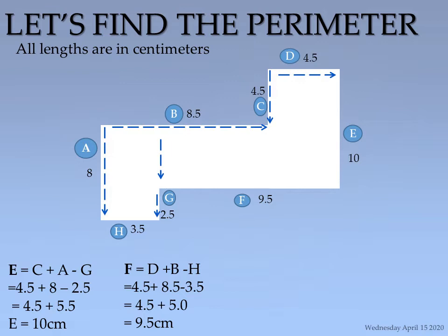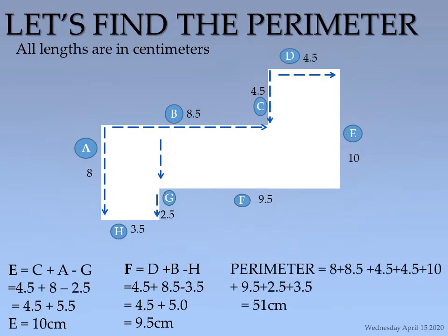Now we have all the sides, so finding the perimeter is straightforward. We add A + B + C + D + E + F + G + H and the total is 51 centimeters. Don't just accept that as the answer — check the addition carefully to make sure it's correct. That's the essence of learning.